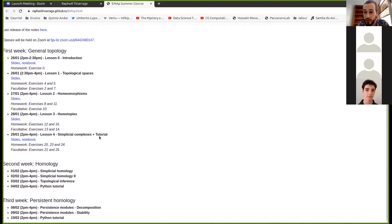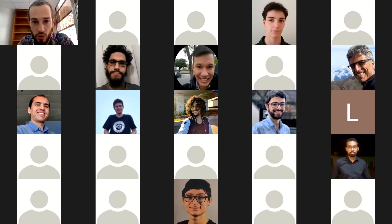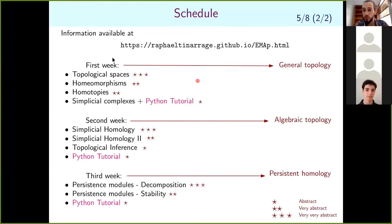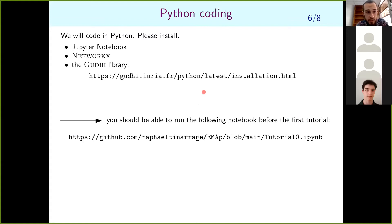We will also code in Python. To do persistent homology, we will use the Gudhi library. We will also use Jupyter notebooks and NetworkX. Before the first tutorial at the end of the week, please download these libraries. If you do, you should be able to run this notebook. So before the end of the week, be able to run this notebook.